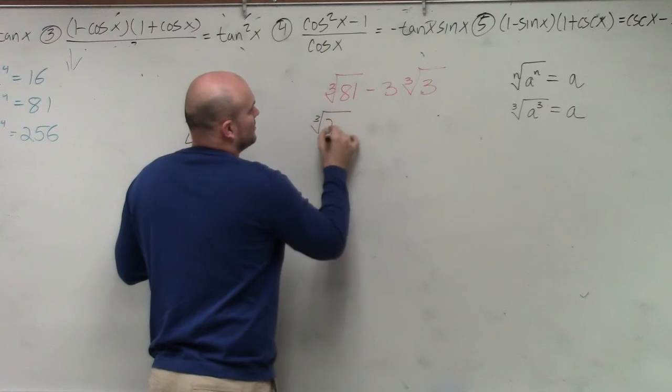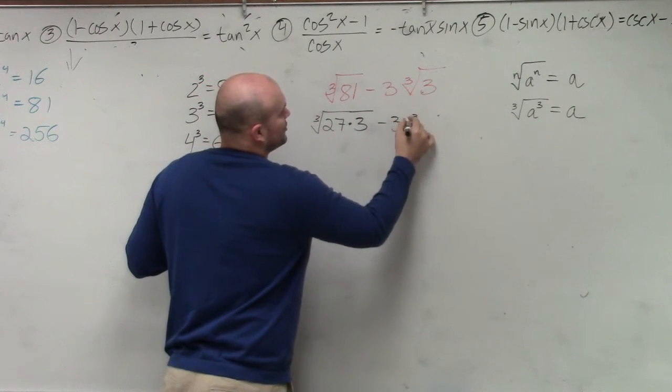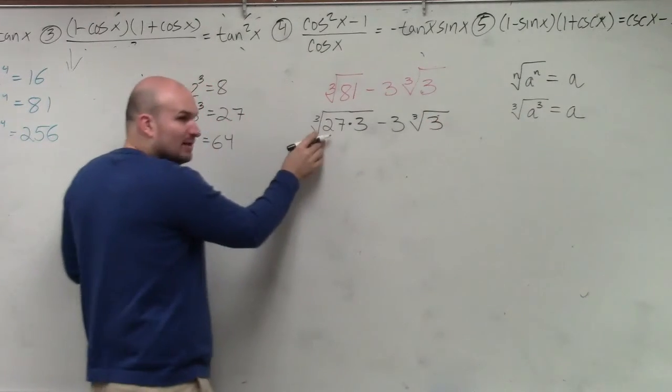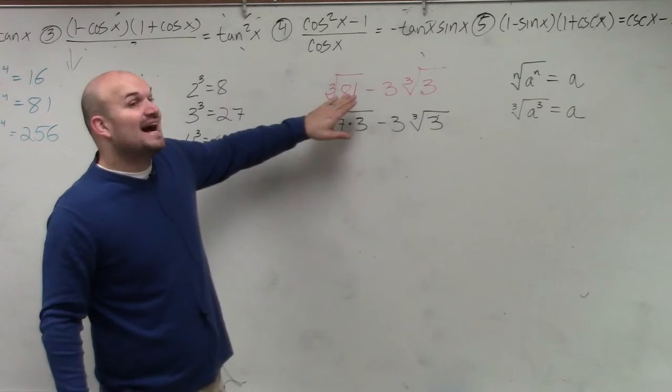So I could write this as cube root of 27 times 3 minus 3 cube root of 3. Well, why do I want to break this up as 27 times? Oh, I'm sorry. First of all, 81 is not a cube number, right?